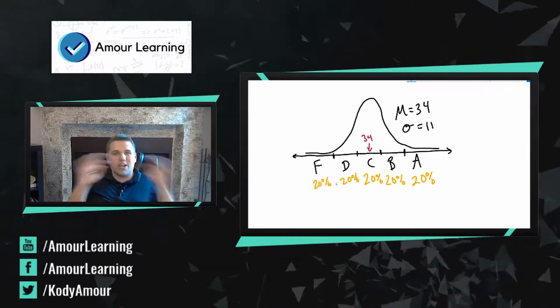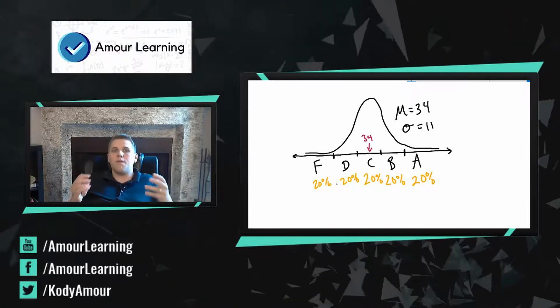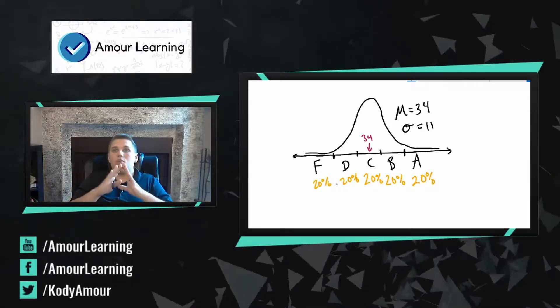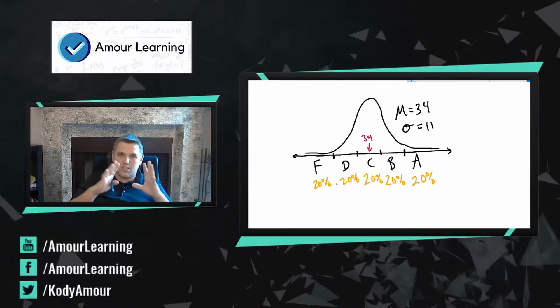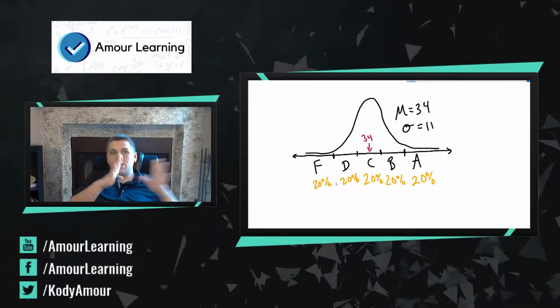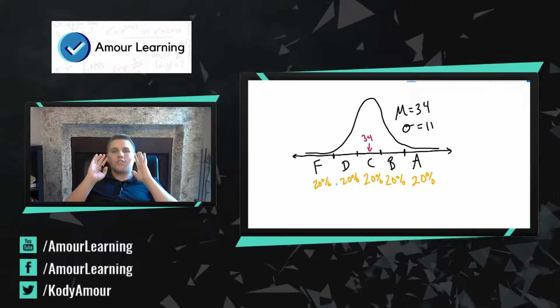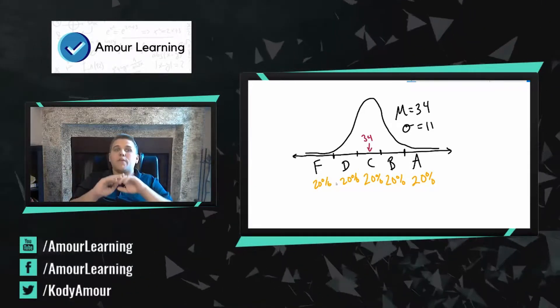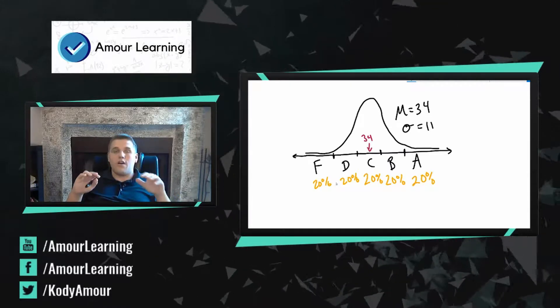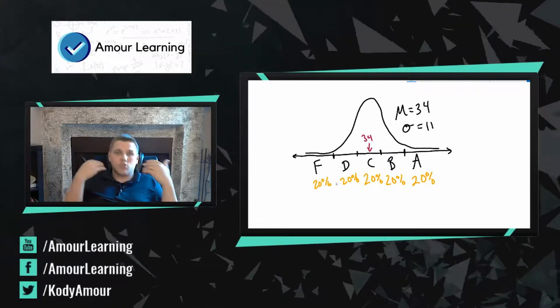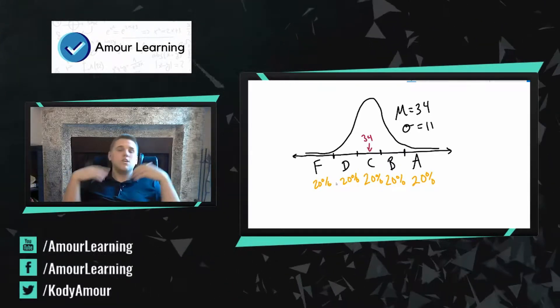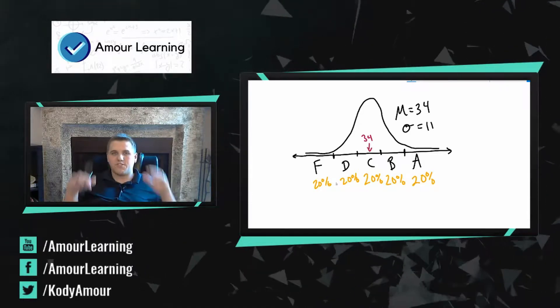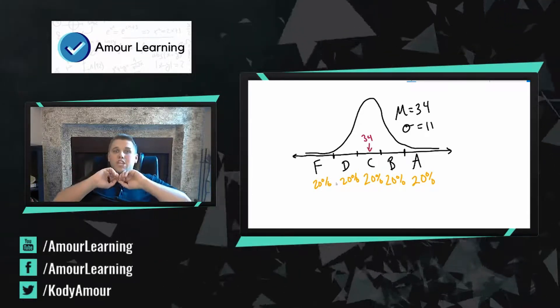Now you can section off your grades however you want. You can maybe make your A's a little bit bigger, your B's a little bit bigger. Maybe your C's keep the same size and shrink your D's and shrink your F's. You can do this however you want. But for the sake of this example, I'm going to assume that there's going to be 20% of people getting A's, 20% getting B's, 20% getting C's, 20% D's, and 20% F's. So grades are pretty much evenly distributed.